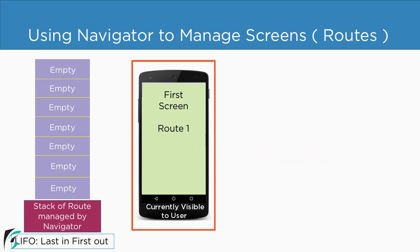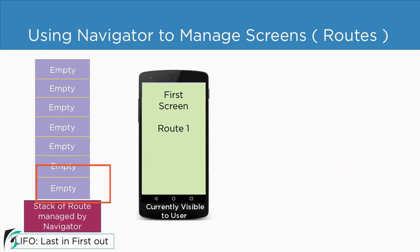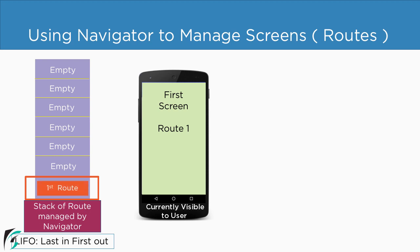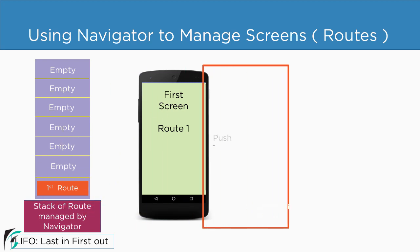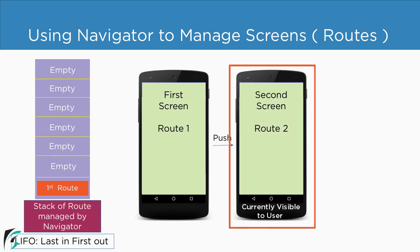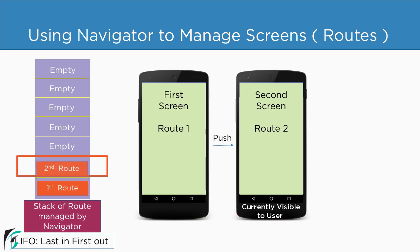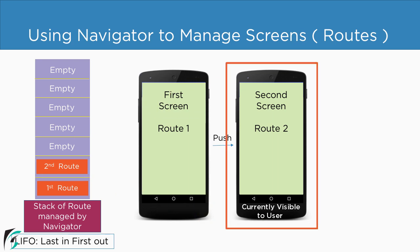When the first screen appears in front of you, it is actually pushed to the stack. So within our stack we have our first element as route one. Now from route one we move to route two, which is our second screen, so the stack will be filled by the second route. The element which is present on the top of the stack is always visible to the user — here route two is on top, so the second screen is visible.